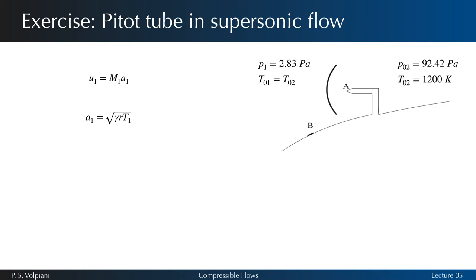The temperature T1 is a priori unknown, but the stagnation temperature behind the shock, T02, is available. It's known that the stagnation temperature remains constant through the shock, so T01 equals T02. In addition, the stagnation and static temperatures are associated by the following relation, leading to the following equation for U1.